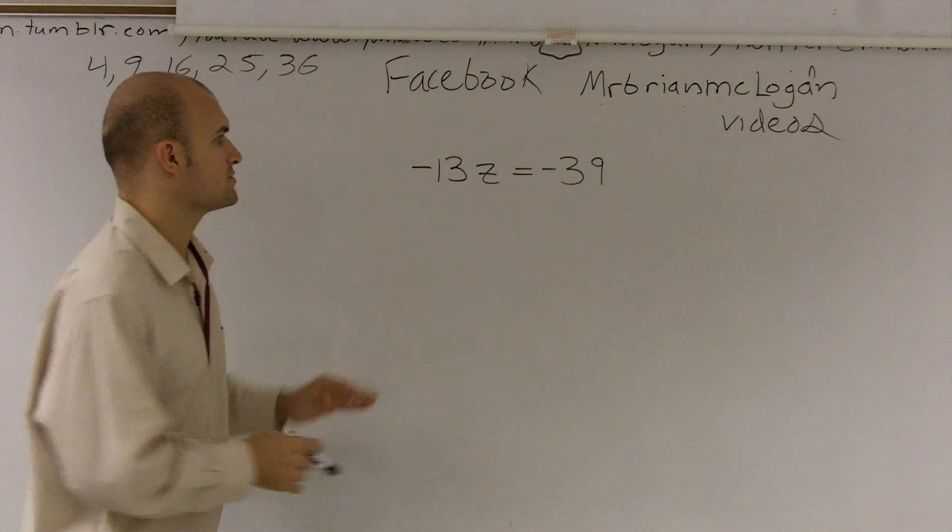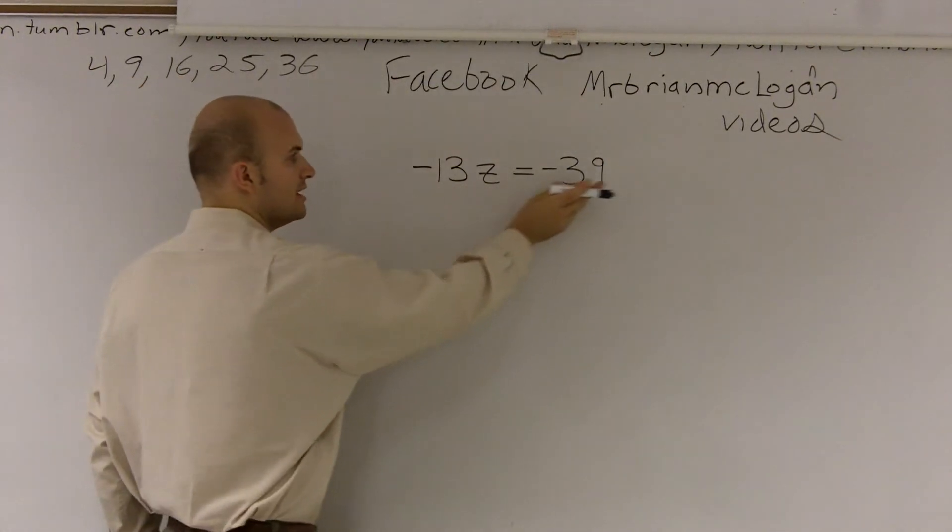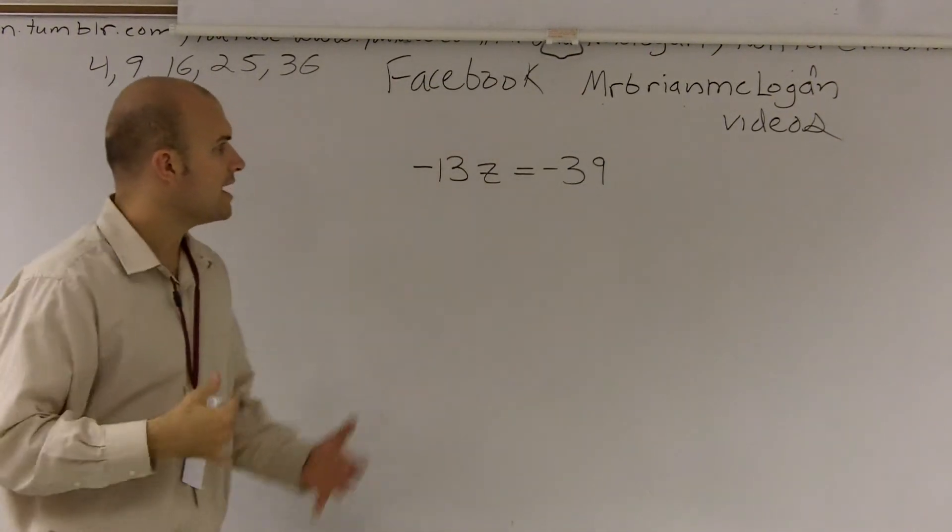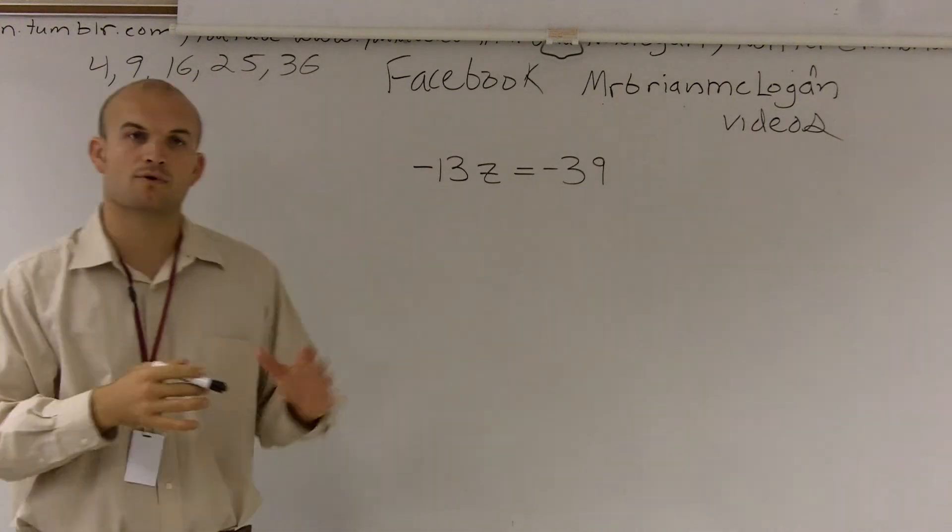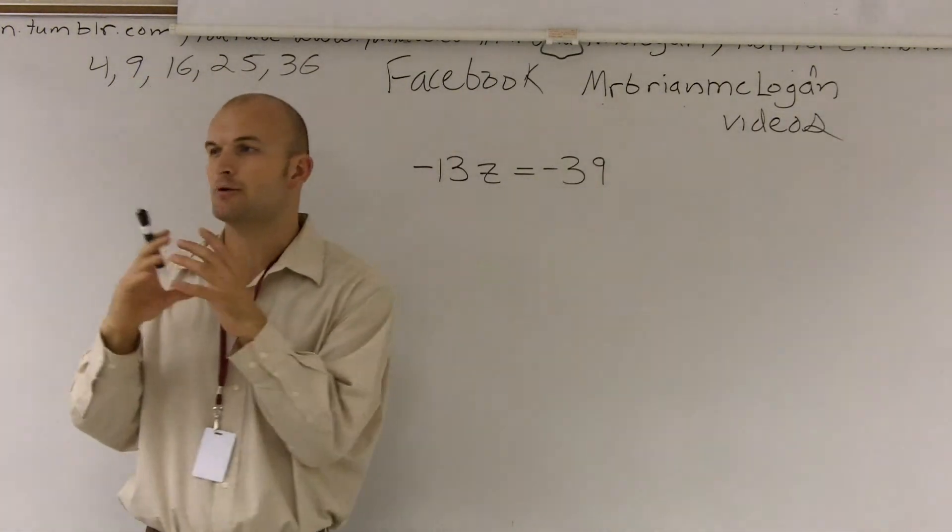So what we're doing is we're saying negative 13 times a number equals negative 39. Now, one thing that we like to do is when we're solving for a variable, we're going to get that variable by itself.